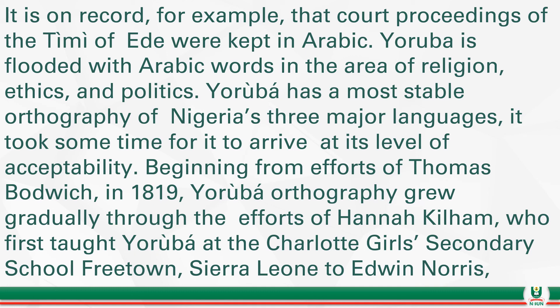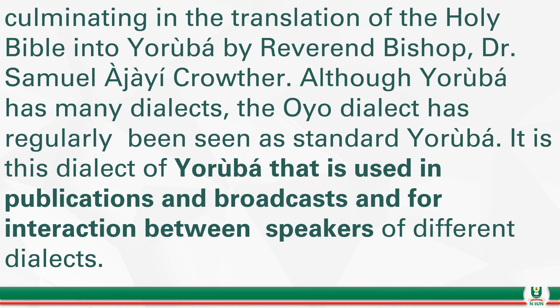It took some time for Yoruba to arrive at this level of orthographic stability, beginning from the efforts of Thomas Budwich in 1819, and progressing gradually through the efforts of scholars who first taught Yoruba at a girls' secondary school in Freetown. Having said that, we have seen the three major Nigerian languages, how they are being used, the sociolinguistic functions they perform in making us interact with one another, and the regions in which they are dominant — and even their function outside the nation.